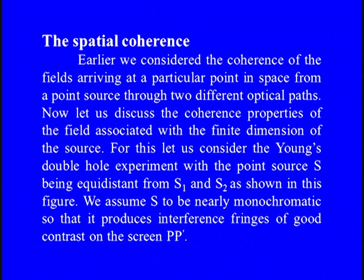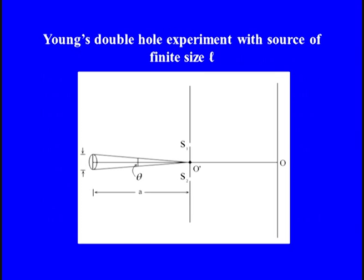Now I am going to describe spatial coherence — that is, the correlation between two points at a certain distance away. Earlier we considered the coherence of the field arriving at a particular point in space from a point source through two different optical paths. Now let us discuss the coherence properties of the field associated with the finite dimension of the source. We consider the Young's double-hole experiment with a point source S equidistant from S₁ and S₂. We assume S to be nearly monochromatic so that it produces interference fringes of good contrast on the screen PP'. The point O on the screen is such that S₁O = S₂O, so the point source S will produce an intensity maximum around point O.